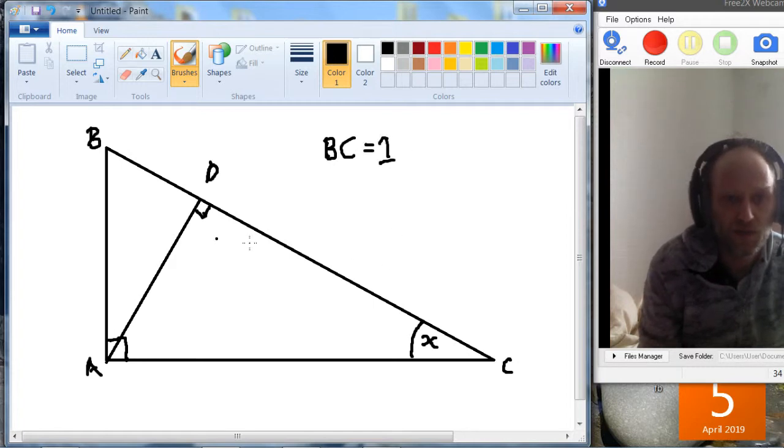So just ignoring the line AD for a minute, we can say we've got a right-angle triangle ABC. BC is 1, and we know X, so we can say that AC is equal to cos of X, and AB is equal to sin of X.